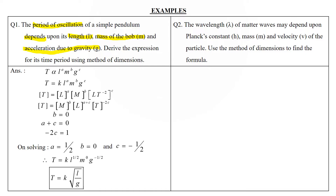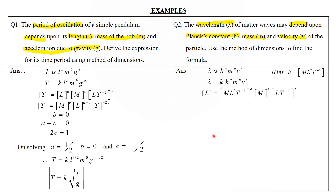Second example: de Broglie wavelength λ depends on Planck's constant h, mass m, and velocity v. Step one: λ ∝ hᵃ · mᵇ · vᶜ. Step two: introduce constant k. Step three: the dimension of h is [ML²T⁻¹], λ is [L], m is [M], and v is [LT⁻¹]. Substituting and rearranging gives M^(a+b), L^(2a+c), T^(−a−c).